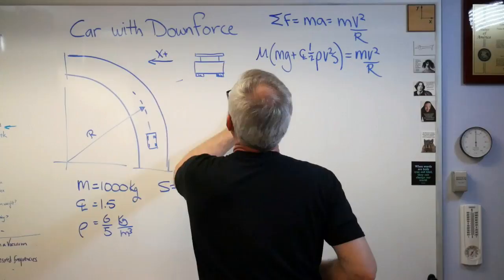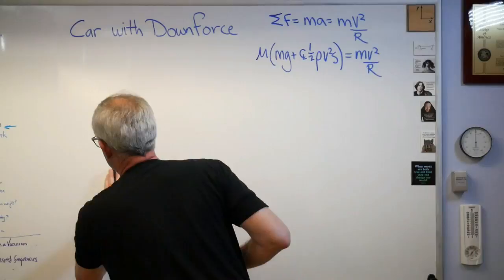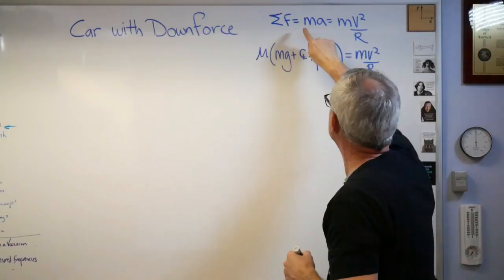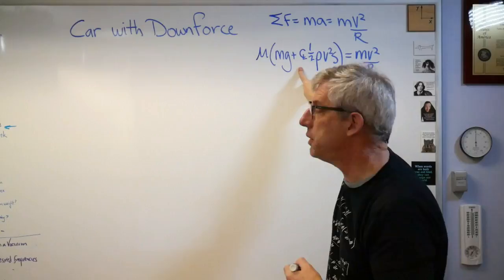I'm gonna run out of space on my little board here. Let's erase this stuff. We've got to solve this for velocity. We're trying to find the maximum velocity through that turn. That's the maximum for the maximum horizontal force you can generate with the friction from the tires, because that's the downforce you've got available to you.